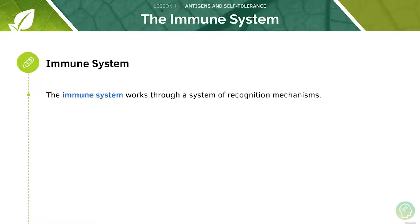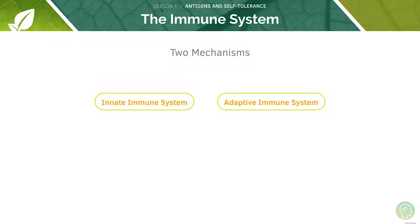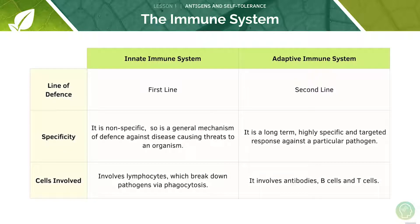The immune system exists in many different forms across many different species. In this section we'll focus on understanding the immune system found in most mammalian species. The immune system works through a system of recognition mechanisms, enabling it to distinguish native cells from pathogens and eliminate them. Before we go into depth with the various parts of the immune system we'll do a quick overview of the whole immune response to understand how everything fits into the puzzle.